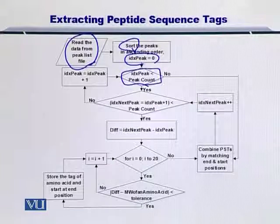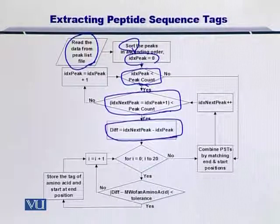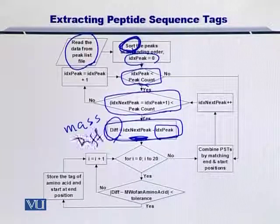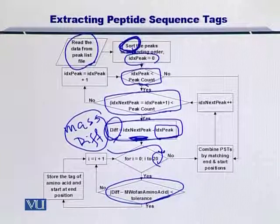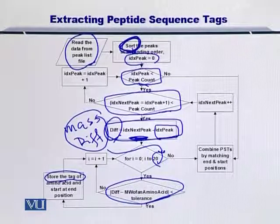So if you are still in the peaks and not finished processing them, and if the next peak is also not the last peak of the peak list, then what you do is you take a difference between the next peak — that is the bigger peak because you sorted it earlier — so the next peak will always be bigger than the previous peak. Once you subtract it, you arrive at the mass difference. If this mass difference is equal to that of an amino acid, since there are 20 amino acids, you will compare this mass difference with all 20 amino acids. The amino acid which is equal to this mass difference — you will store the tag of that amino acid and you will be in a position to safely say that this is the amino acid that is the difference between these two peaks.